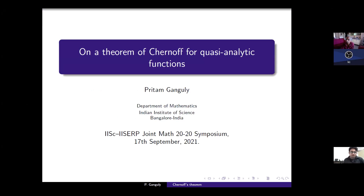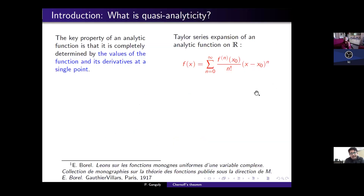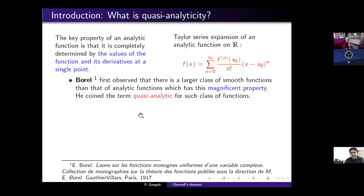The main aim of this talk is to give you a flavor of Chernoff type theorems in different spaces and recent progress and open problems in this direction. We start with the word quasi-analyticity. The key property of an analytic function is that it is completely determined by the values of the function and its derivatives at a single point, which is clear from the Taylor series expansion. Borel first observed that there is a larger class of smooth functions which has this property, and he coined the term quasi-analytic for such a class.